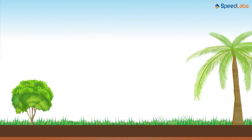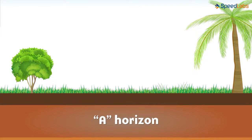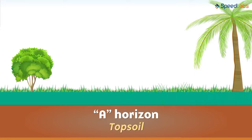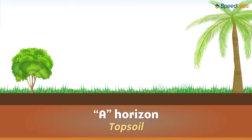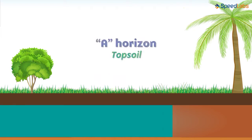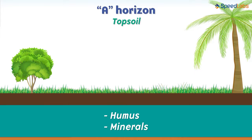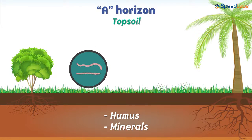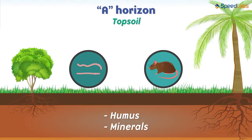After the O horizon, the next layer is the A horizon. This layer is also referred to as topsoil. It is called so because it is actually the first layer of soil, though the O horizon occupies some part at the top. This layer generally consists of humus and several minerals, which is why plant roots grow well in it. Not only this, but organisms like little worms and even a few types of rodents can occupy this layer, making it a home for many organisms.